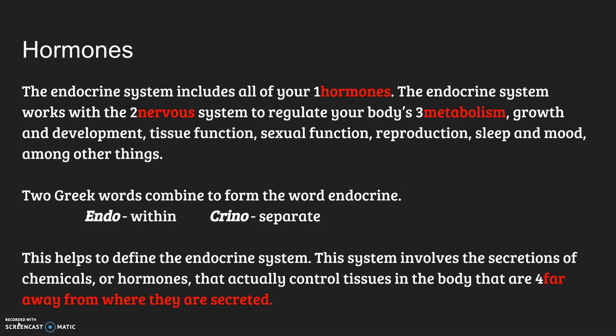The Endocrine System includes all your hormones. The Endocrine System works along with your nervous system to regulate your body's metabolism, growth and development, tissue function, sexual function, reproduction, your sleep, your mood, and some other things as well.